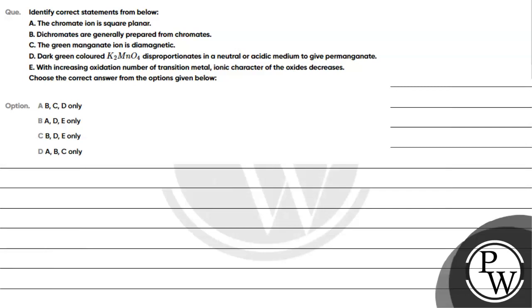Let's read this question. Identify the correct statements. We have to tell you what are the correct statements. The options are: A - chromate ion is square planar, B - dichromates are generally prepared from chromates, C - the green manganate dianion is diamagnetic, D - dark green K2MnO4 disproportionates in neutral and acidic medium to give permanganate, E - with increasing oxidation number of transition metal, ionic character of the oxides decreases. Choose the correct answer from the options given below.